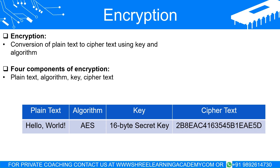An encryption system generally consists of four elements: the original plain text, the encryption algorithm, the key, and the cipher text. The key is used in conjunction with the algorithm to convert the plain text into cipher text and vice versa. The secrecy and complexity of the key are what make an encrypted message secure.